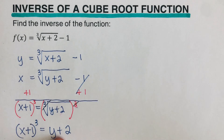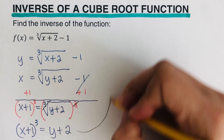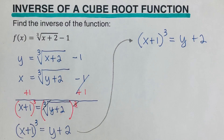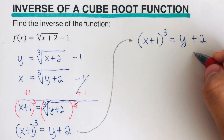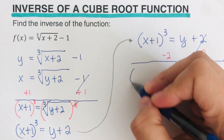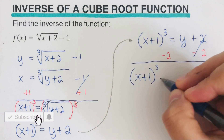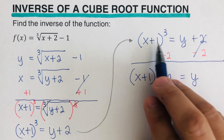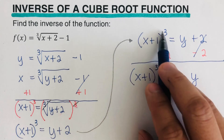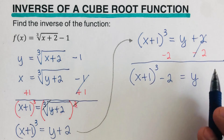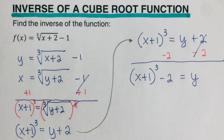We already have y plus 2 on the right side, so we can isolate y by itself. From here, subtract 2 from both sides, and that gives us: x plus 1, cubed, minus 2, equals y. Note that I did not subtract the 2 from the 1 inside the parentheses — those go together. Negative 2 is a separate term.